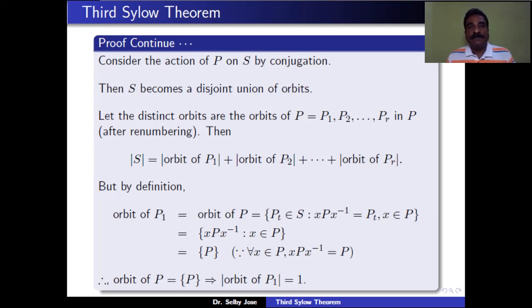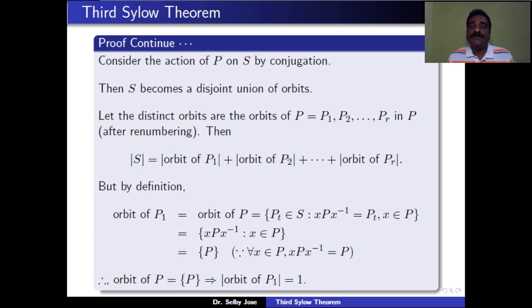By definition, P = P1. The orbit of P1 is the set of all Pt in S such that x*P*x⁻¹ = Pt, where x is in P. Since x is in P, x*P*x⁻¹ = P itself. Therefore the orbit of P1 contains only P, and the number of elements in this orbit is equal to 1.